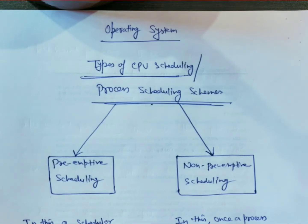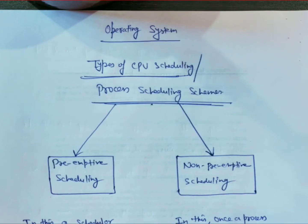There are two types of process scheduling schemes. First is preemptive scheduling and second is non-preemptive scheduling. First of all we will discuss about preemptive scheduling — what is preemptive scheduling and what is non-preemptive scheduling?